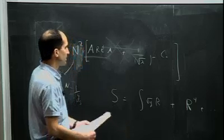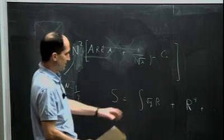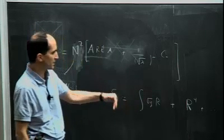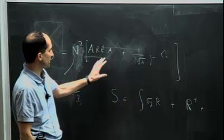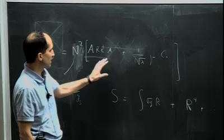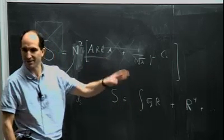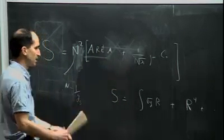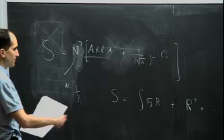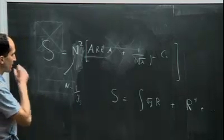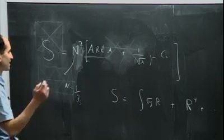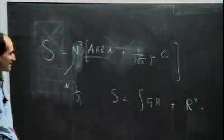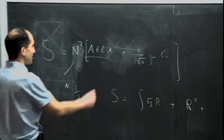So the idea is that the first term in the action will produce an area term, and the R^4 term will produce some correction. You have to work a little bit to see what the correction is. Let me first discuss this for the case of black holes, because it's a little simpler: the solution has a U(1) symmetry, and you can give a more explicit formula — though the other formula has also been worked out.